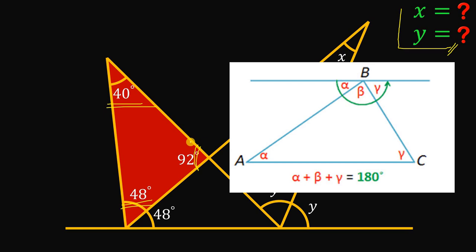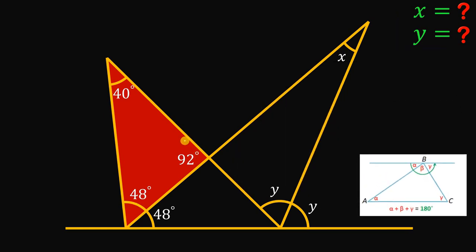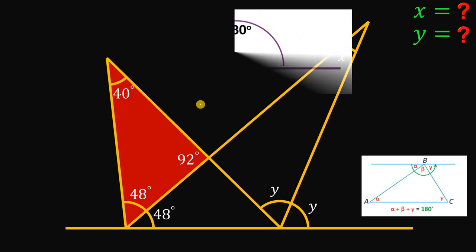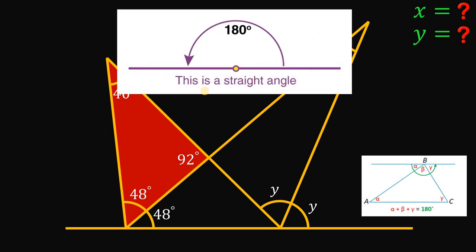Next, we will use the concept that a straight line, or straight angle, must measure 180 degrees. Take note — we have a straight angle here. We know this is 92 degrees, so the other angle must be equal to 88 degrees to make this a total of 180 degrees.